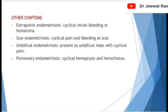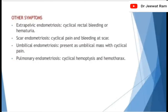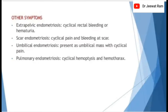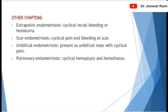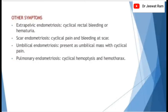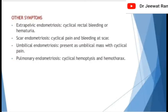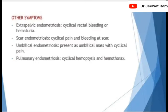Other symptoms of extrapelvic endometriosis: cyclical rectal bleeding or hematuria. Scar endometriosis presents with cyclical pain and bleeding at the scar site. Umbilical endometriosis presents as an umbilical mass with cyclical pain. Pulmonary endometriosis causes cyclical hemoptysis and hemothorax.